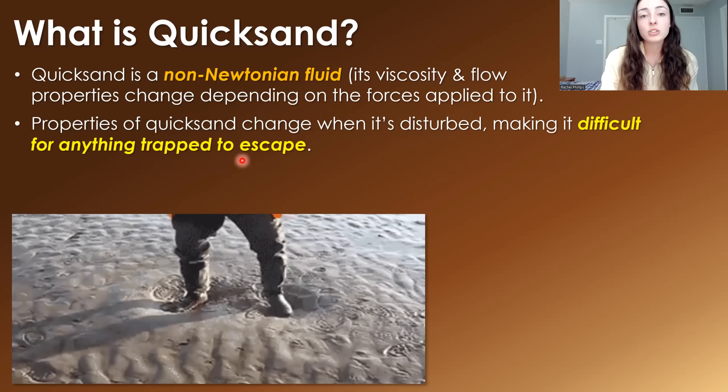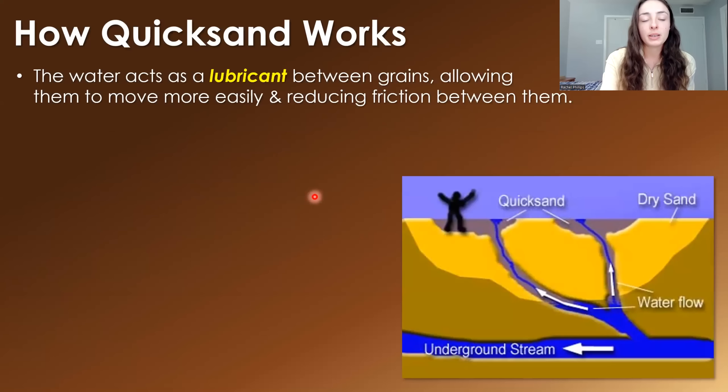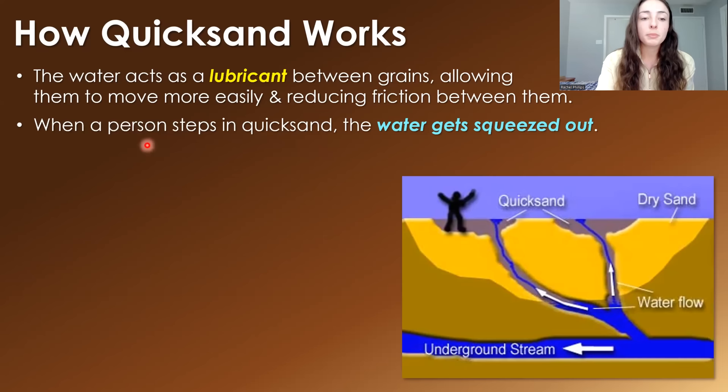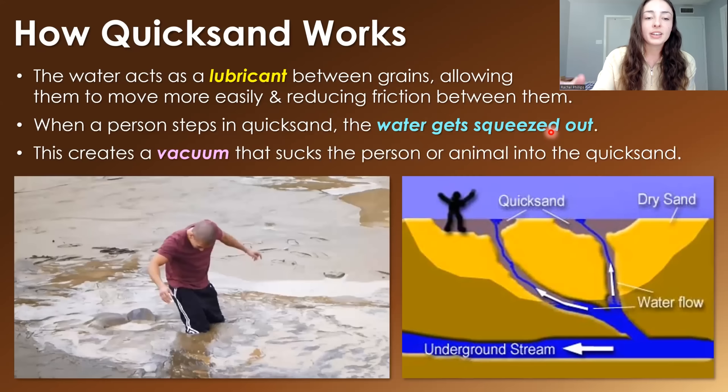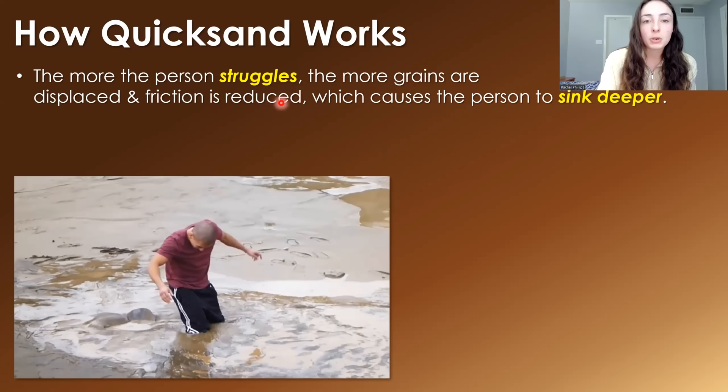The more you move around, the more it acts as a liquid and you sink down. Quicksand forms when water saturates sand and leads to instability, because the water acts as a lubricant between grains, reducing friction and allowing them to move more easily. When a person steps on quicksand, the water gets squeezed out of that area and creates a kind of vacuum that sucks the person in. The more they struggle, the more the grains are displaced, friction is reduced, and the more they sink.